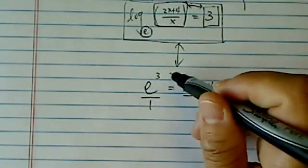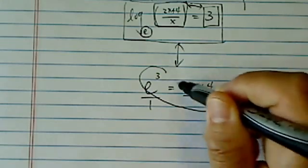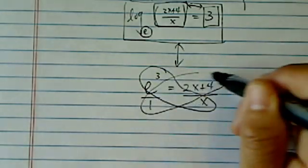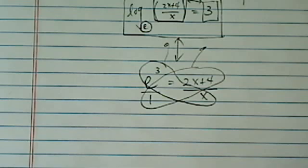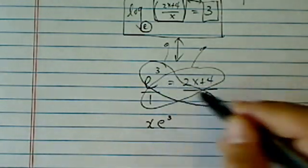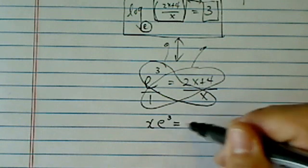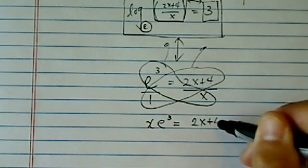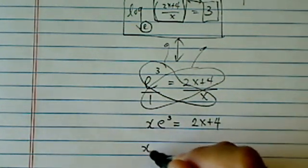Here, we have a fraction equation. I'll tell my students, just draw a butterfly. A butterfly gets you out of the fraction quicker than anything else. So cross multiply x times e to the 3 is equal to 2x plus 4 times 1, basically.